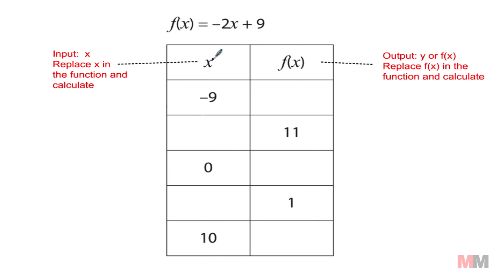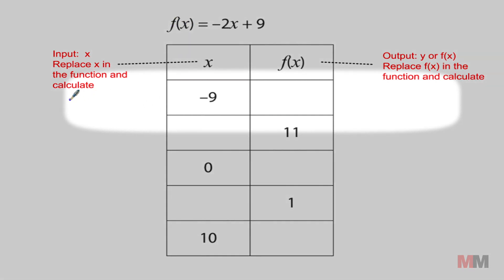Let's say I'm given x as negative 9. I just have to put this inside the function, the input, to get the output. Plug it in, negative 2 times negative 9 plus 9, and you will get the output, the y value. Negative 2 times negative 9 is 18 plus 9, which is 27.